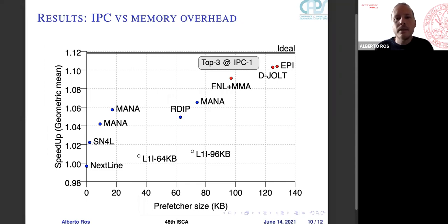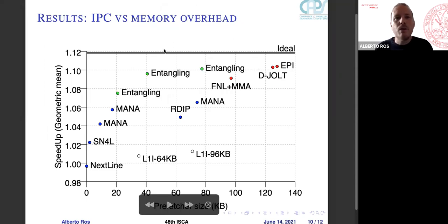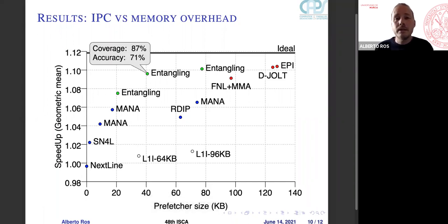And finally, our cost-effective implementation of the entangling prefetcher for 2K, 4K, and 8K entries. We can see that for 8K entries, we get almost 10% improvement, very close to the ideal, for a size of 40 kilobytes. We get a coverage of 87% and accuracy of 71%, better than all the other prefetchers that we evaluate.